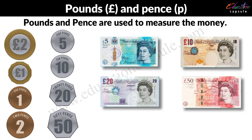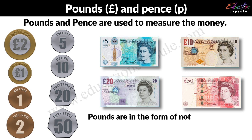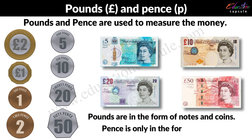And for notes, these are 5 pound, 10 pound, 20 pound, 50 pounds. Pounds and pence can be in the form of notes and coins as we have just seen here. Pence is only in the form of coins.